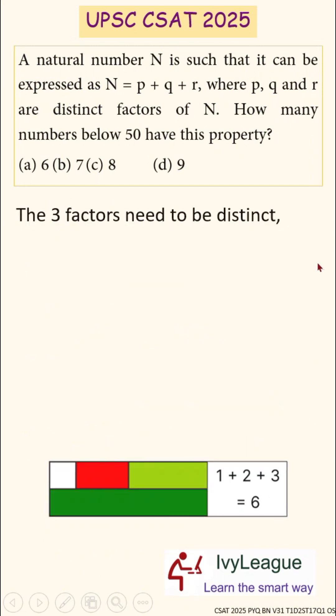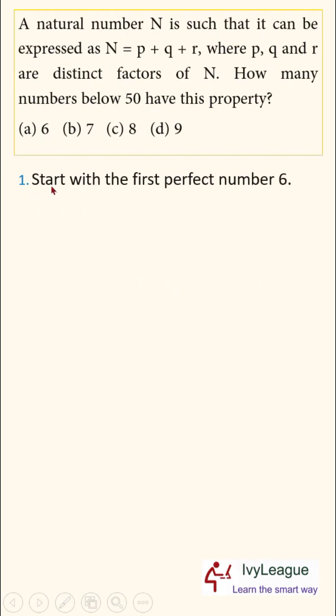The three factors according to the question need to be distinct. So p, q and r need to be distinct and p, q and r can be any three distinct factors of N. So let's start with the first perfect number which is 6. Proper divisors of 6 are 1, 2 and 3. When you add 1, 2 and 3 you end up getting 6 as a sum. So 6 is one of the possible values of the number N.